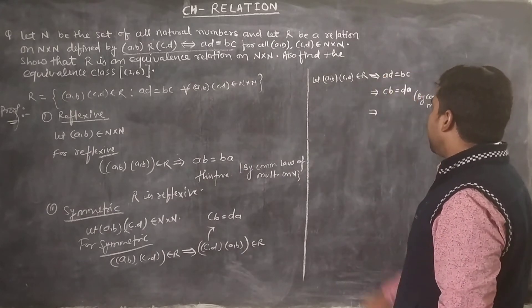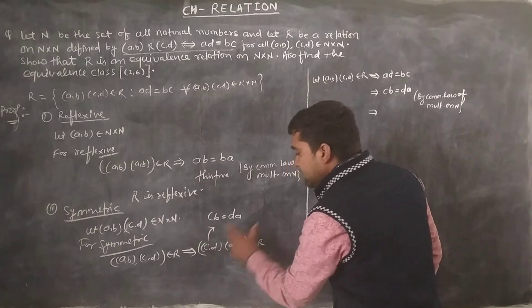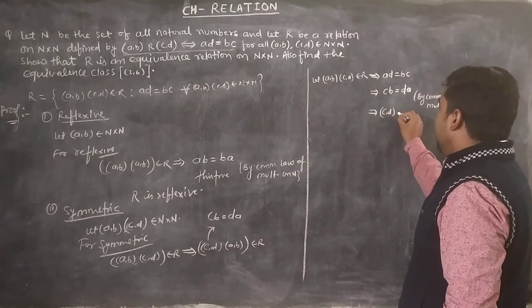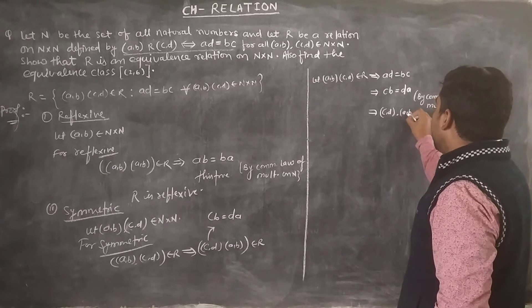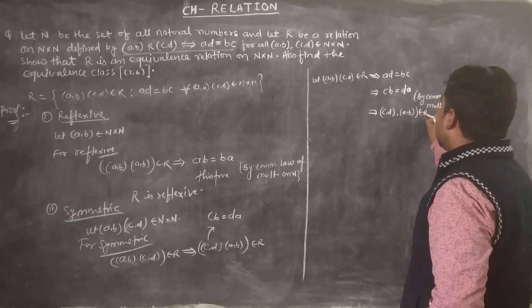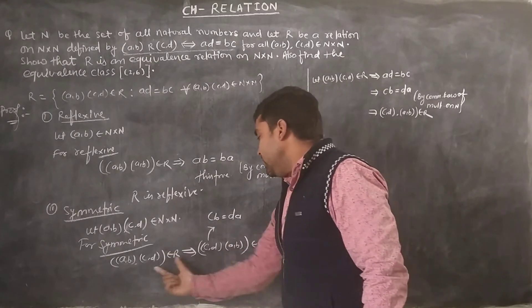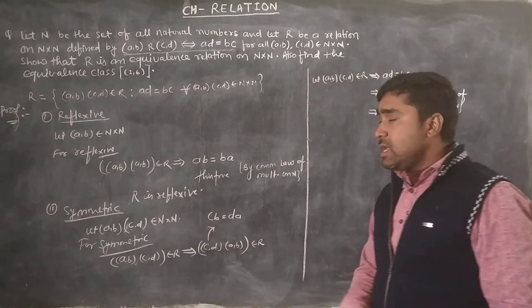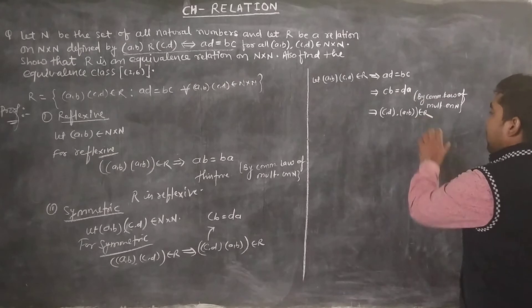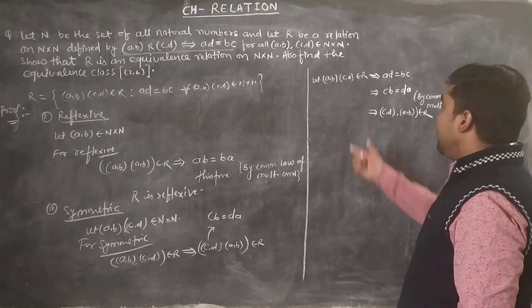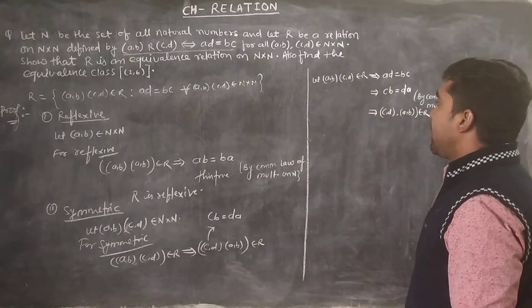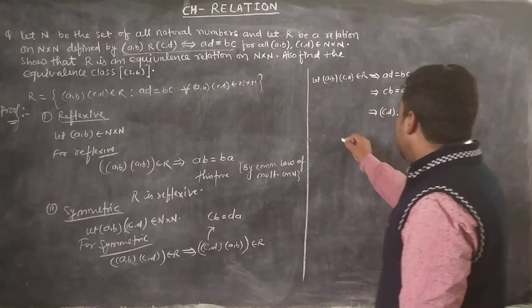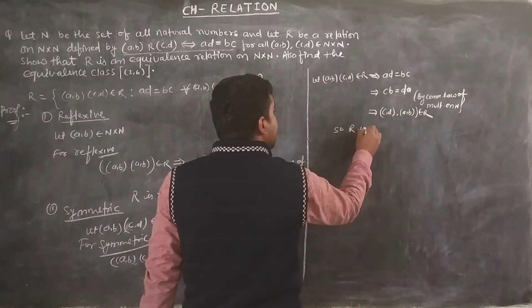When c·b equals d·a is true, we can say that (c,d) R (a,b) belongs to R. So R is symmetric for all a,b,c,d. Therefore R is symmetric.